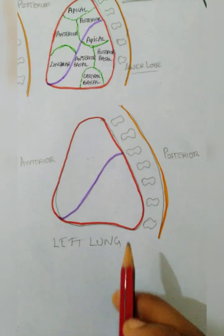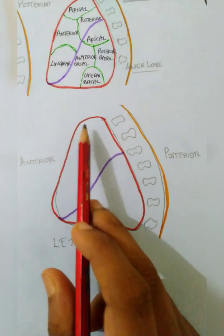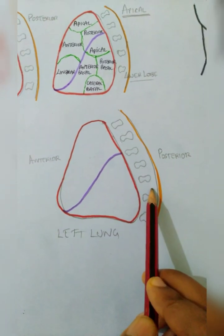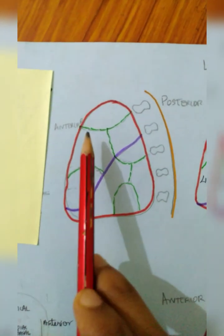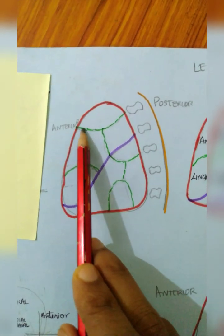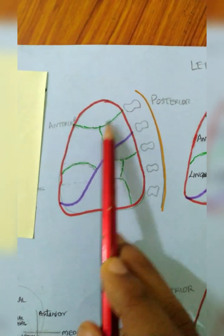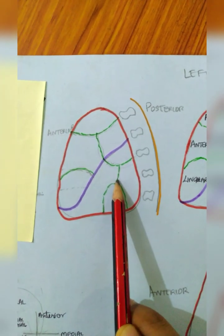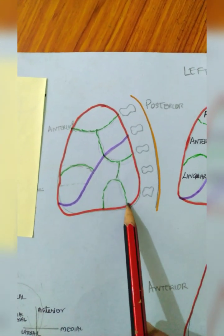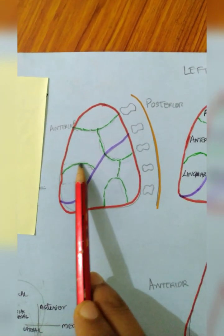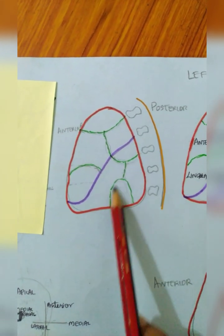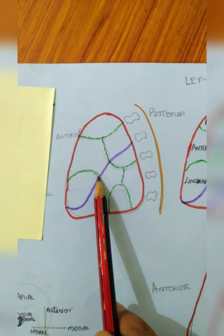Next we are dealing with the left lung. This is the anterior portion and this is the posterior side in relation to the spine. Here we can divide the segments — draw a Y, then another Y, then a mountain, then another mountain. So: Y, then another Y, then a mountain, then a mountain.